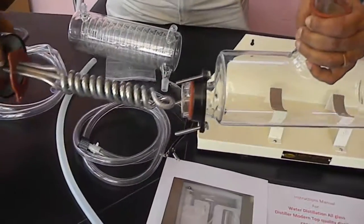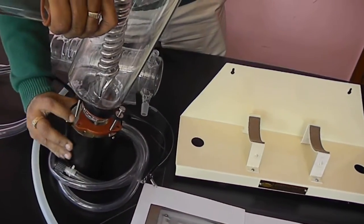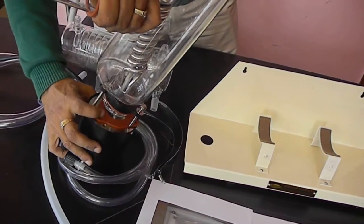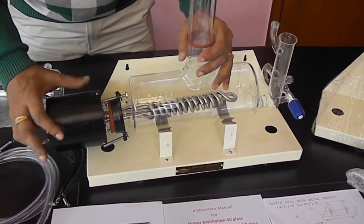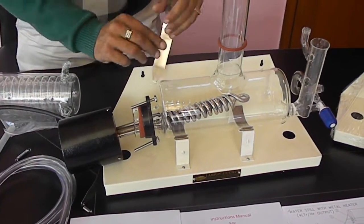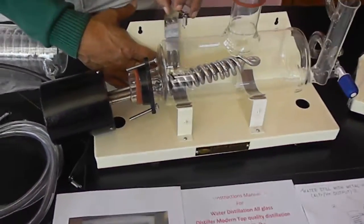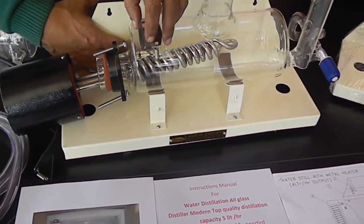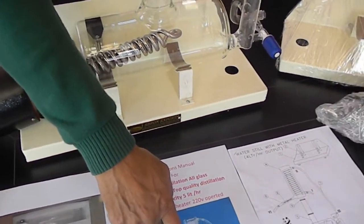Then this heater will go inside and we will fix the heaters on these three screws so that this secures properly and there is no leakage. Then we will put these clips which are on the back side. There is one clip here. These two clips will go and fix like this.